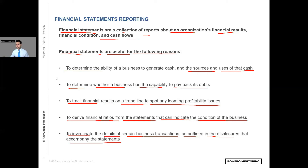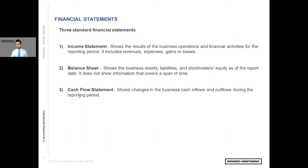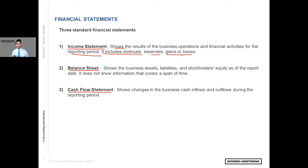So what are the main financial statements? There are three types: number one, the income statement; number two, the balance sheet; and number three, the cash flow statement. The income statement shows the results of the business operations and financial activities for the reporting period — this includes revenue, expenses, and gain or loss. In other words, was your company profitable for this particular quarter or calendar year? Did we make money or did we lose money?